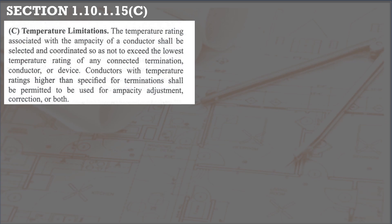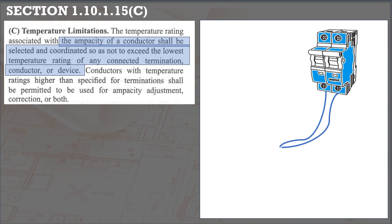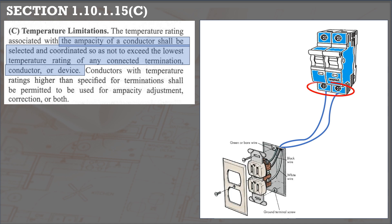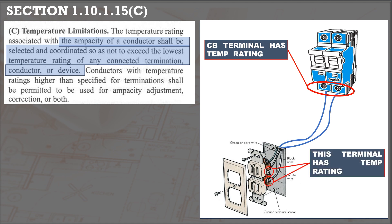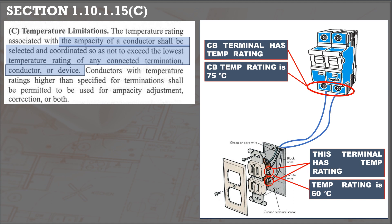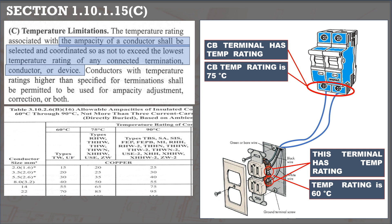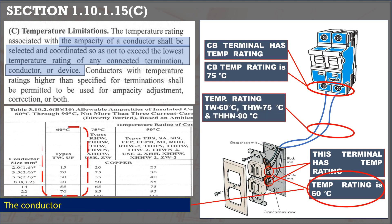Section 1.10.1.15C states that the ampacity of the conductor will be based on the temperature rating of the lowest-rated connected termination, conductor, or device within the equipment served. In the figure shown, a conductor is terminated to a circuit breaker and a receptacle outlet. If the circuit breaker terminal has a temperature rating of 75 degrees Celsius and the receptacle outlet is 60 degrees, the termination point with the lowest temperature rating is the determining factor. Hence, whether we use THW or THHN, the conductor's ampacity will be based on 60 degrees Celsius.